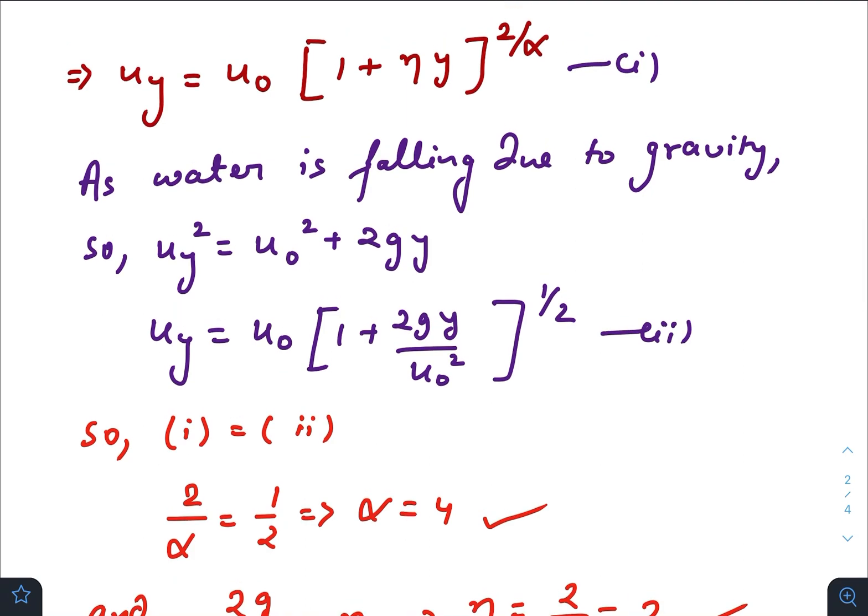So u_y would be, taking u naught square common from here, we just modify the equation like this, whole to the power half.